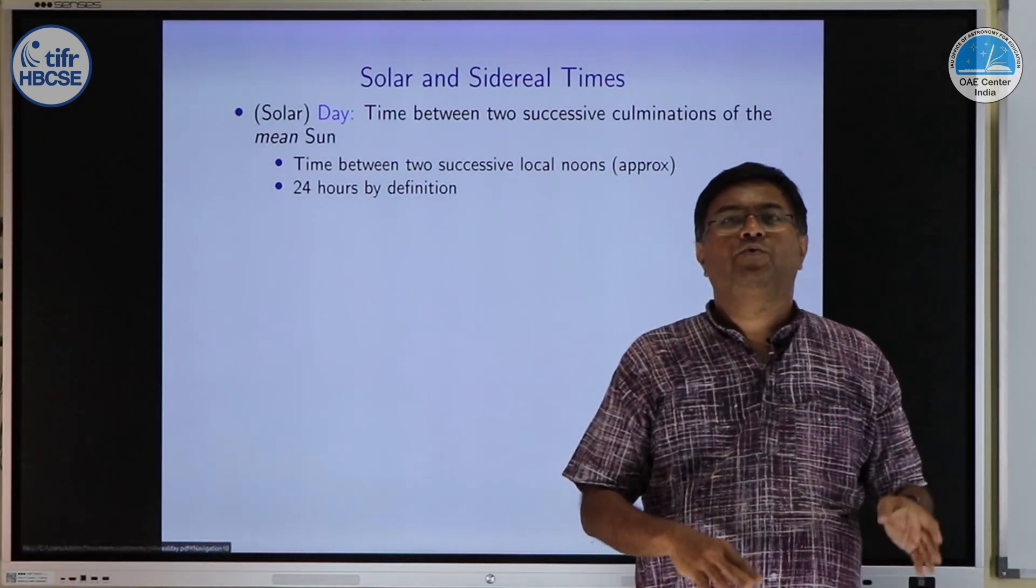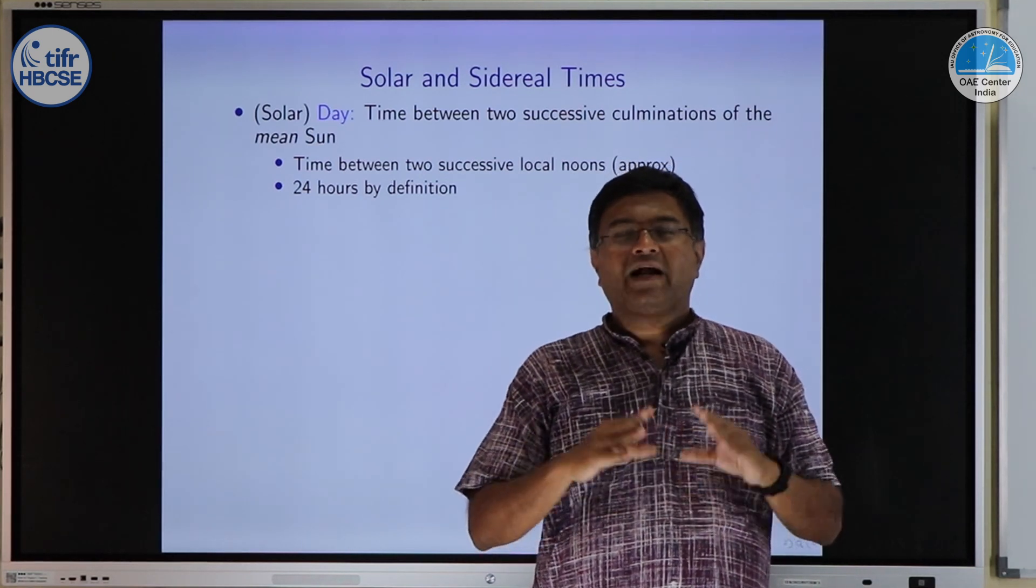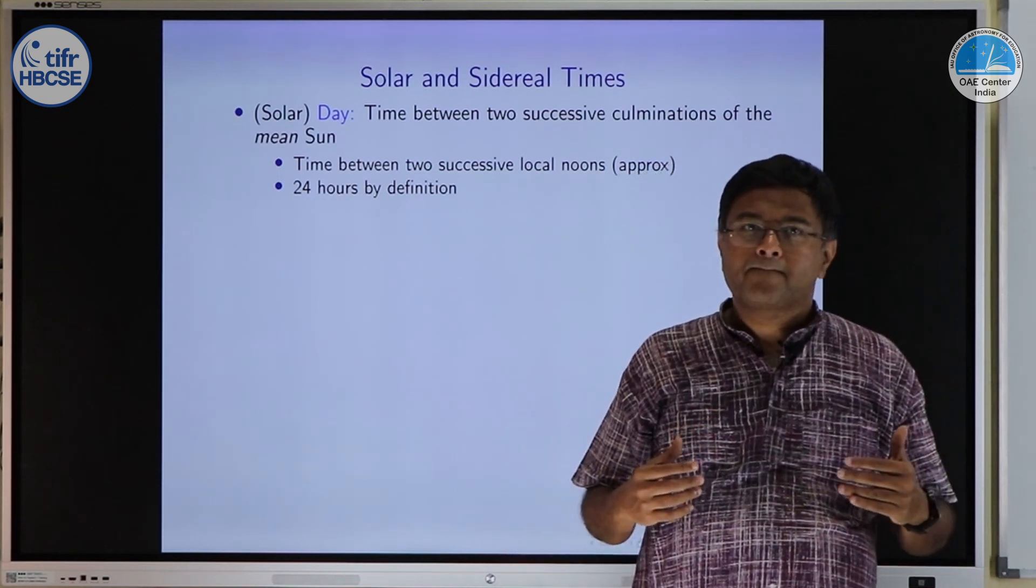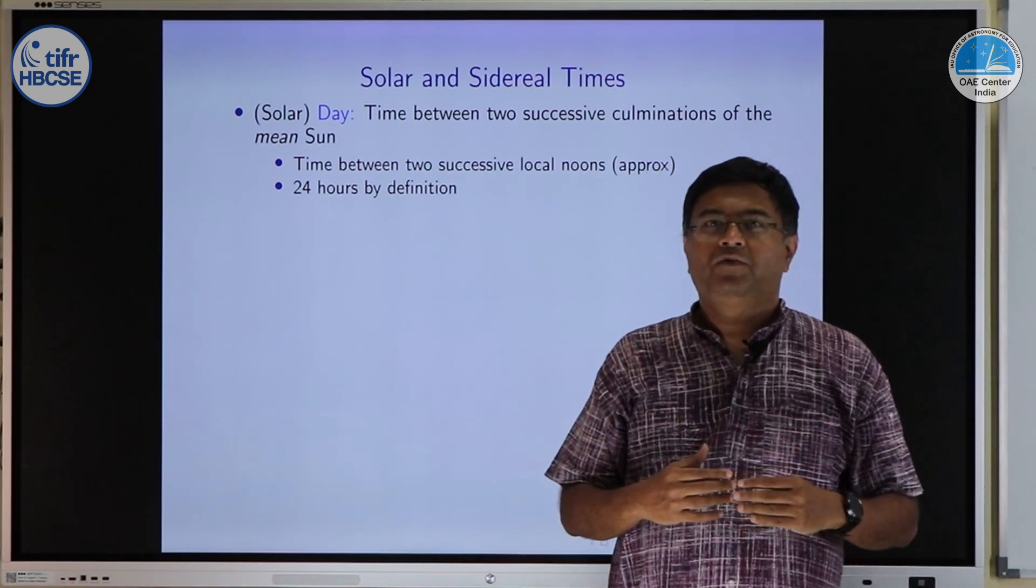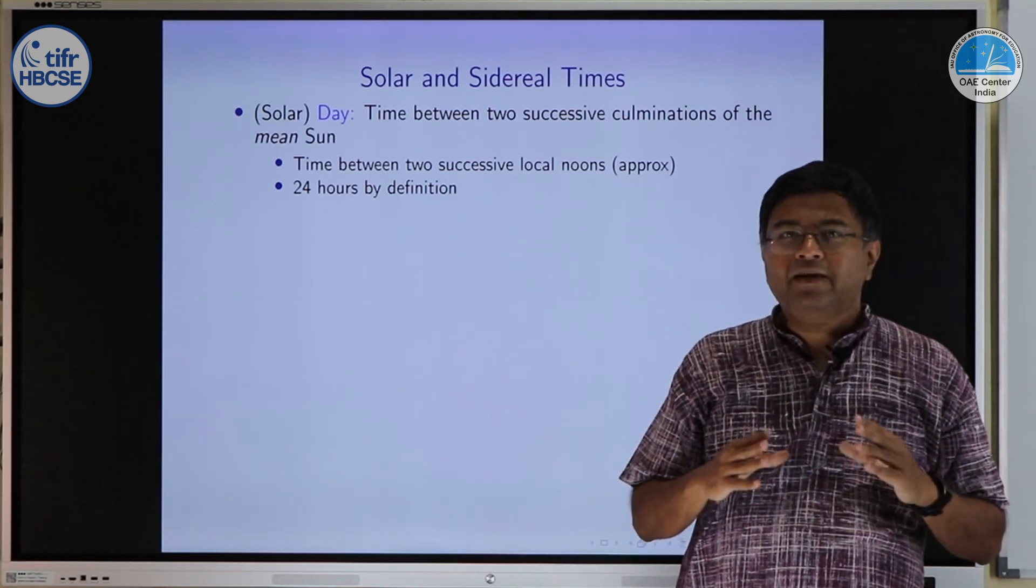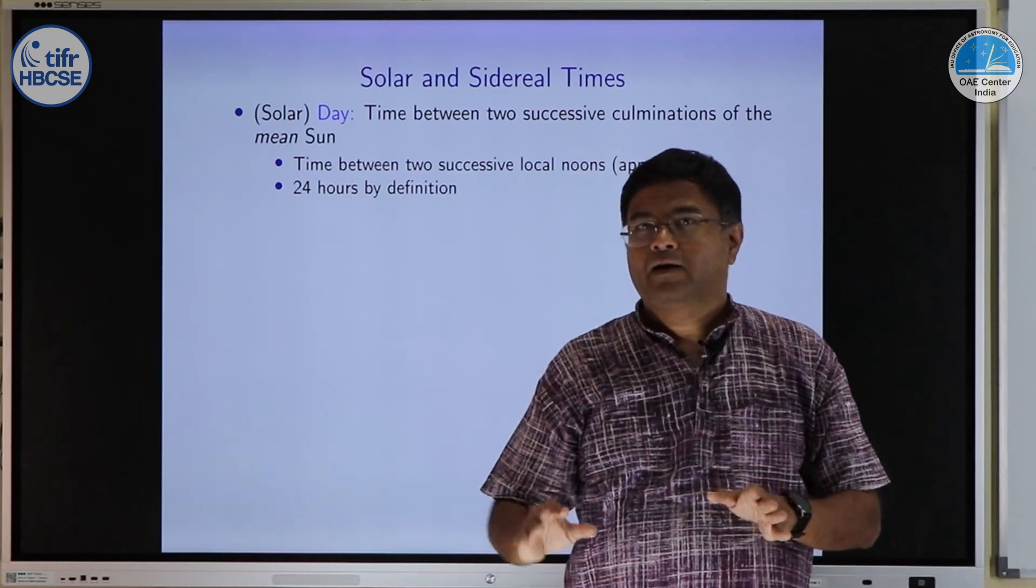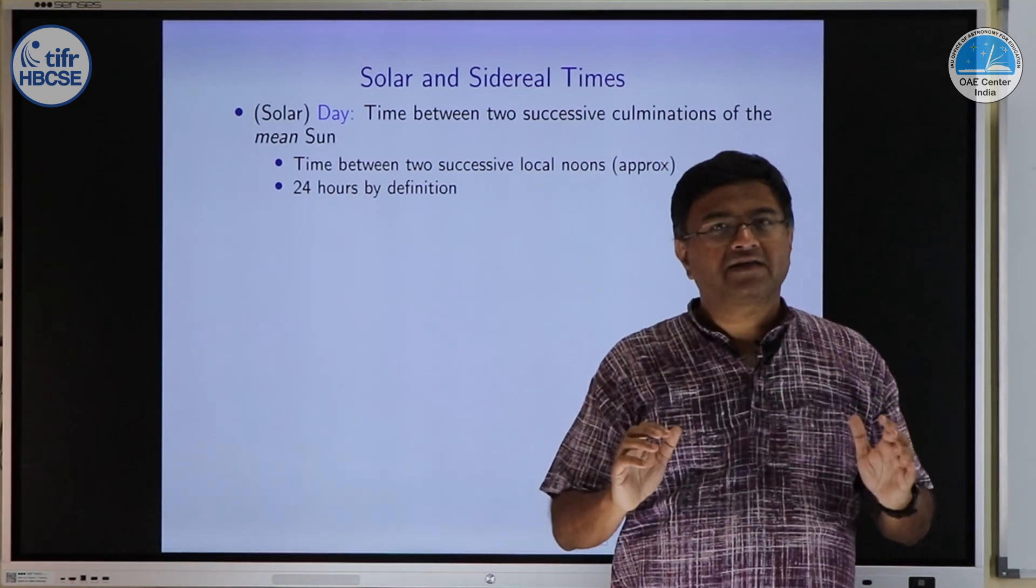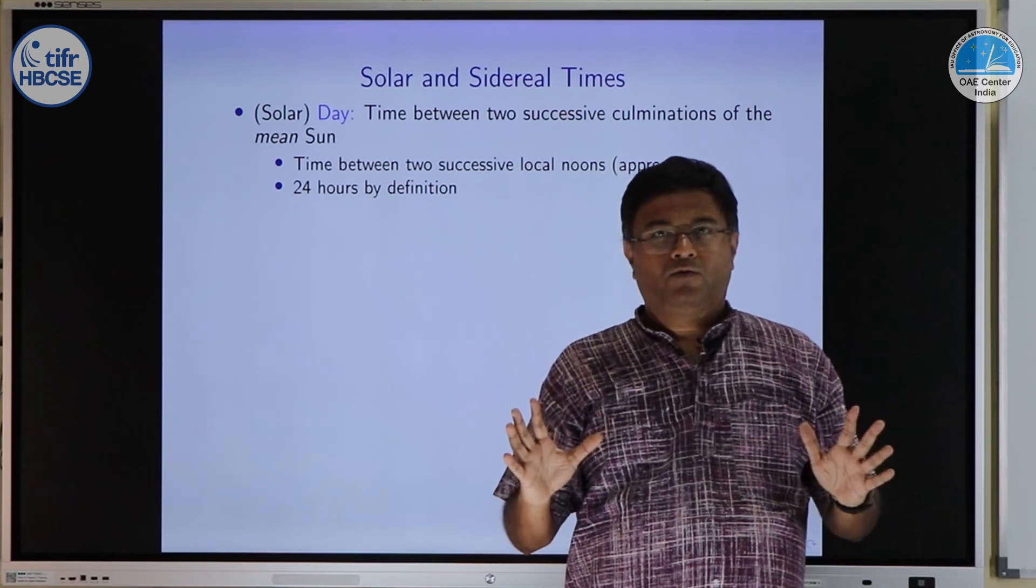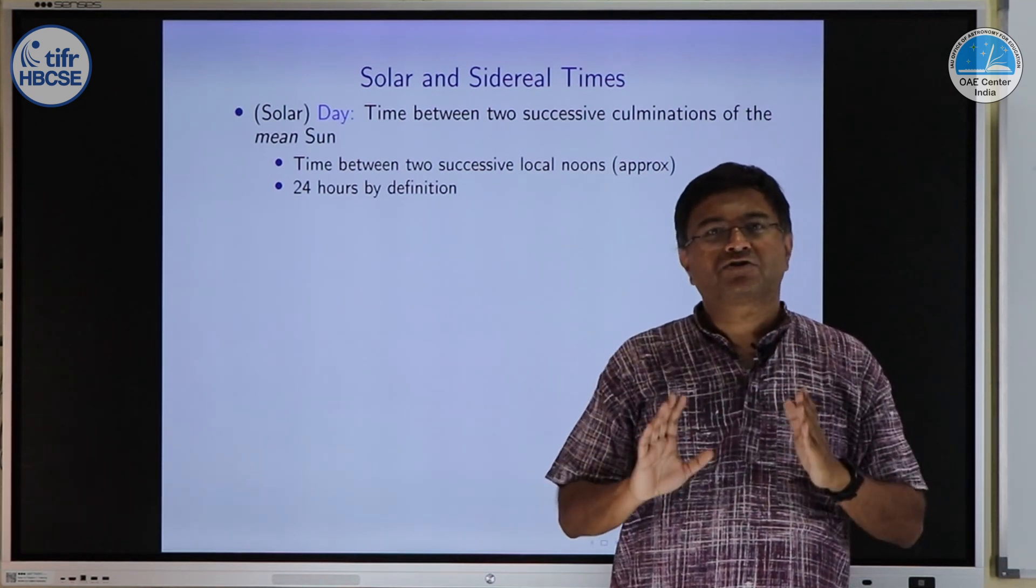With that we come to the definition of day. There are at least two definitions which are very commonly used in astronomy. First, we define something called solar day. Solar day is time between two successive culminations of the sun. The slide says mean sun, that is for a technical reason which we will cover in another video. But for practical purposes, let's say two successive culminations of sun.